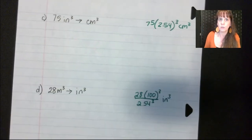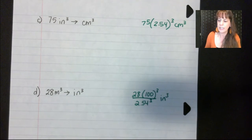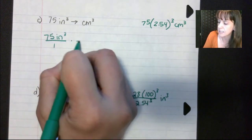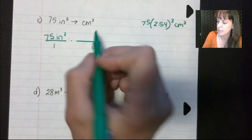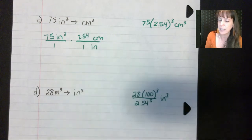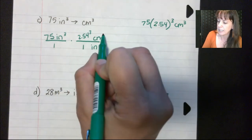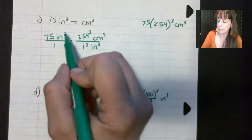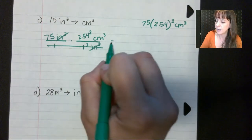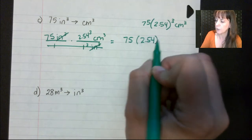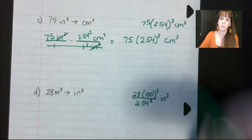Let's convert 75 inches cubed into centimeters cubed. Start with 75 inches cubed over one, times a conversion factor with inches downstairs and centimeters upstairs — in one inch there are 2.54 centimeters. Cube everything except the first number. The inches cancel out, giving 75 times 2.54 to the third power centimeters cubed.